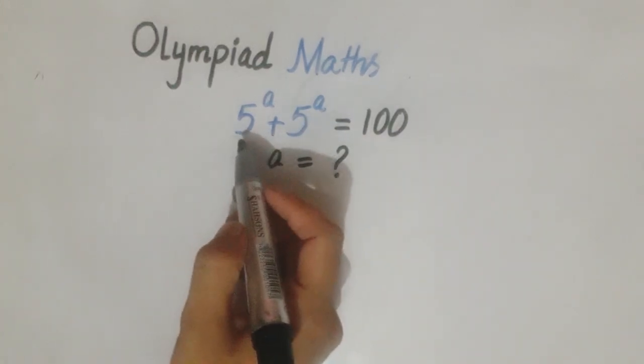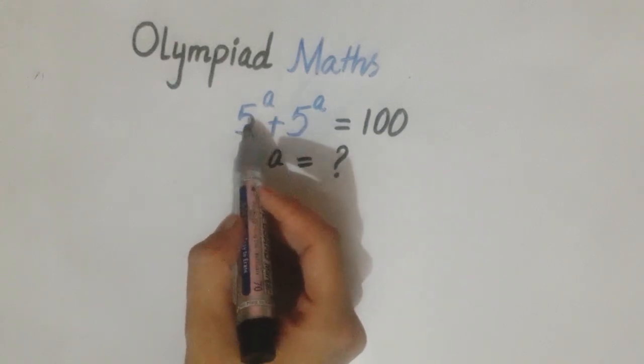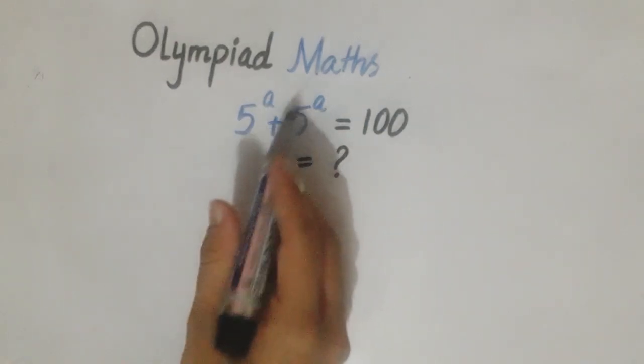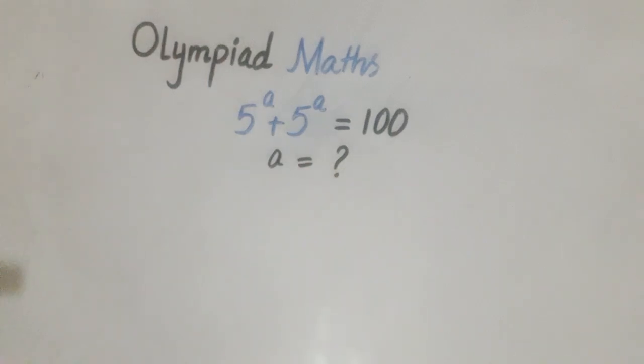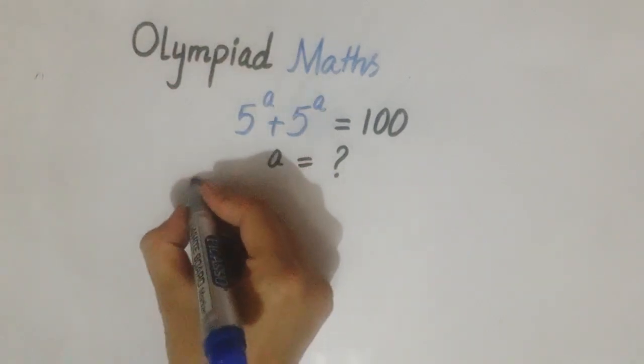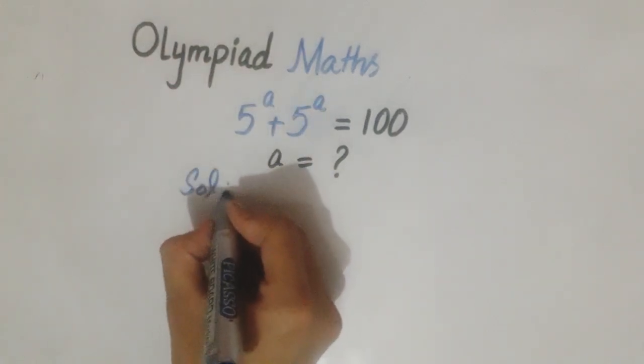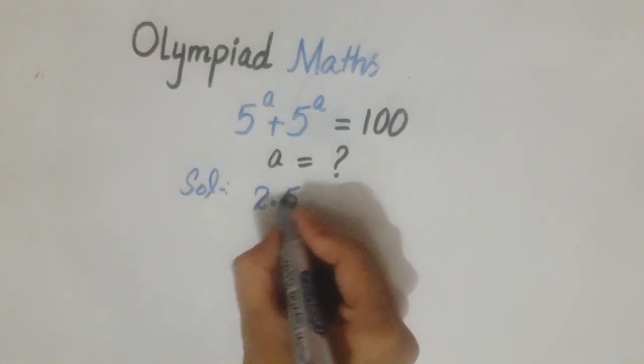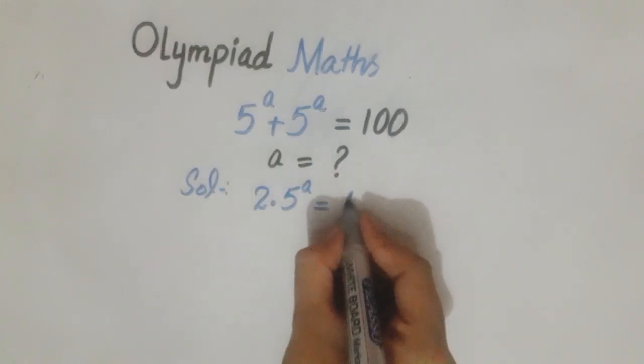For this purpose, we take 5 raised to power a plus 5 raised to power a. Both have the same power, so we can add them. When we solve this, we write it as 2 times 5 raised to power a, which equals 100.